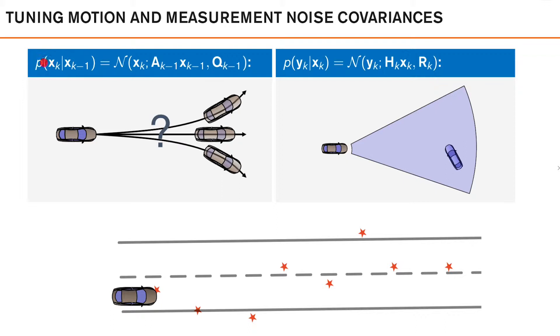A motion model, describing how the vehicle moves, and a measurement model, describing the relationship between the state and our observations.